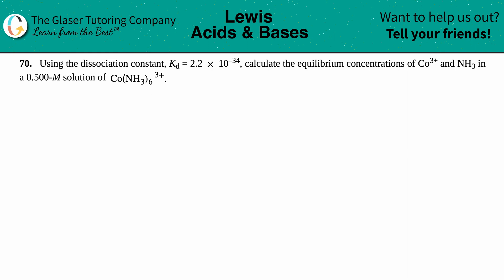Problem number 70: using the dissociation constant Kd, which equals 2.2 times 10 to the negative 34th, calculate the equilibrium concentrations of the cobalt ion Co³⁺ and ammonia NH₃ in a 0.500 molarity solution of Co(NH₃)₆³⁺. We're dealing with Kd values here.